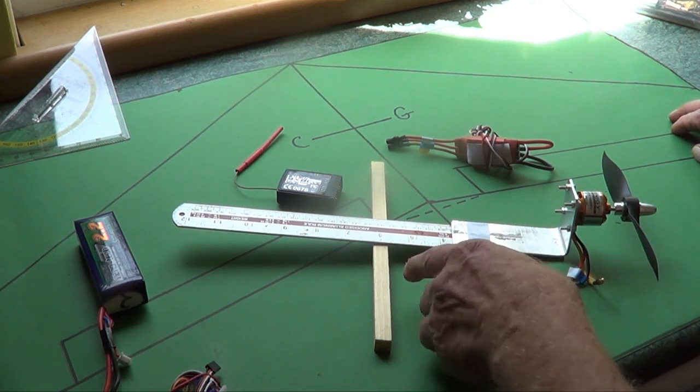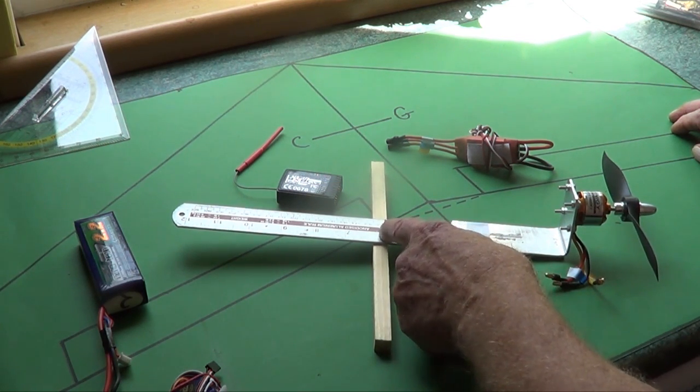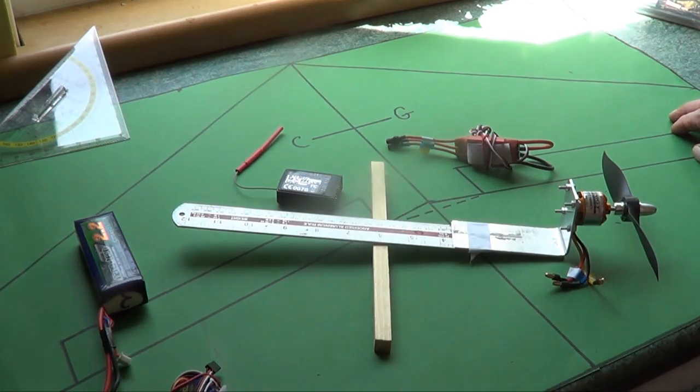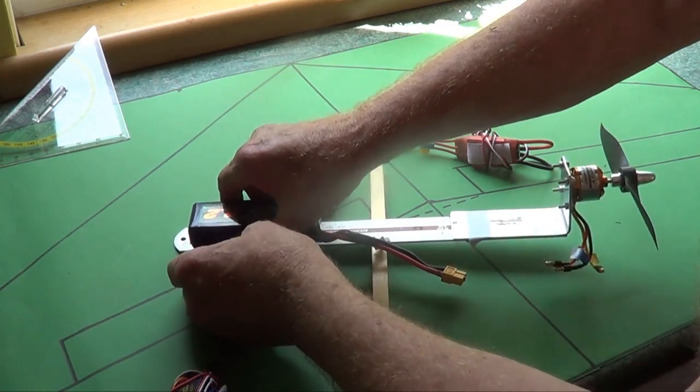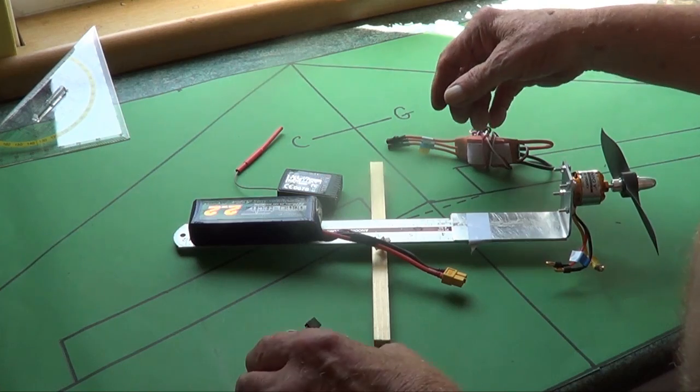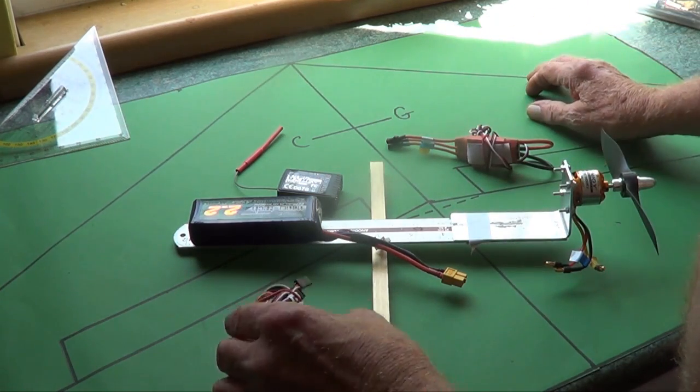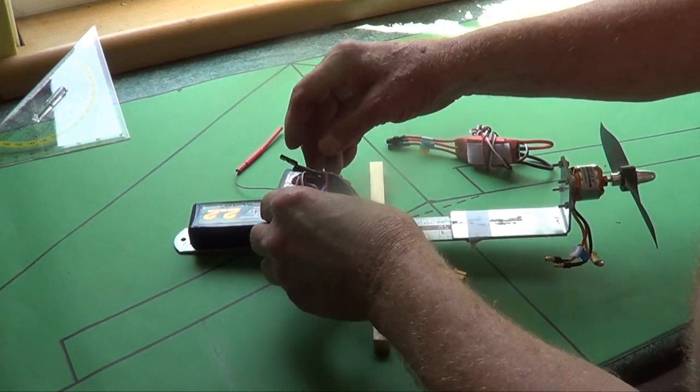And what you're aiming for is to get the CG in the middle. So if we put a battery up towards the nose of the plane, and because of the position of the servos on the plane, they're going to have to go somewhere about there.